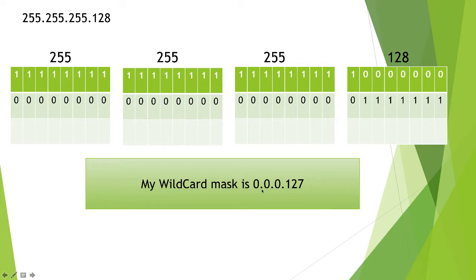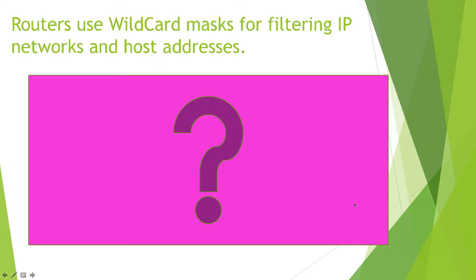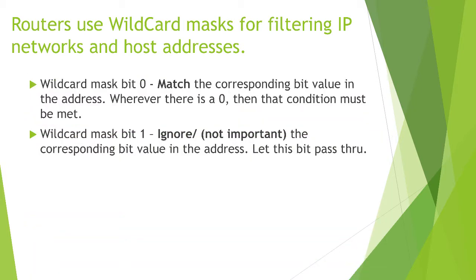So what does this wildcard mask mean? Wherever there's a zero, that value must match. So with 192.168.1.0, that means 192 must match, 168 must match, the 1 must match. Because the zero is there, that must match — but any of the hosts could get through, because with a wildcard mask wherever there's a one, I don't really care about it. Routers use wildcard masks for filtering IP networks and hosts. Wherever I have a zero in the wildcard mask, that value must be matched; wherever I have a one, I can ignore it.